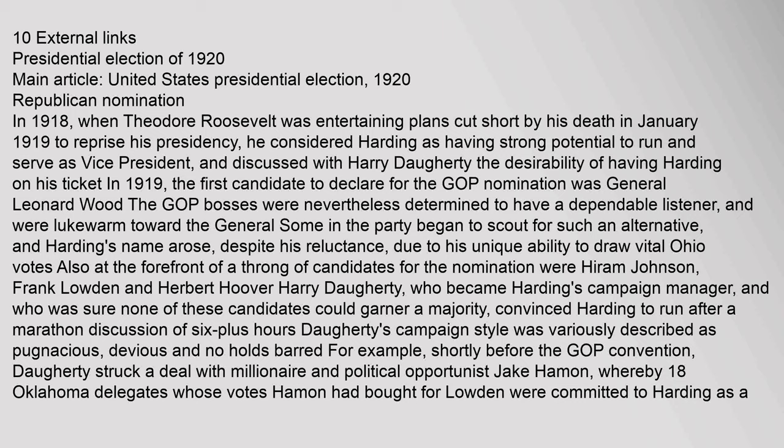Also at the forefront of candidates for the nomination were Hiram Johnson, Frank Loden, and Herbert Hoover. Harry Doherty, who became Harding's campaign manager, convinced Harding to run after a marathon discussion of six-plus hours. Doherty's campaign style was variously described as pugnacious, devious, and no-holds-barred. Shortly before the GOP convention, Doherty struck a deal with millionaire and political opportunist Jake Hammond, whereby 18 Oklahoma delegates were committed to Harding as a second choice if Loden's effort faltered.